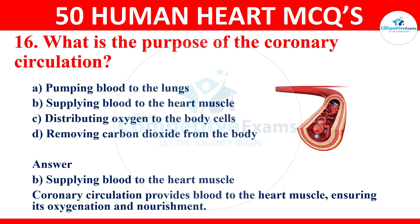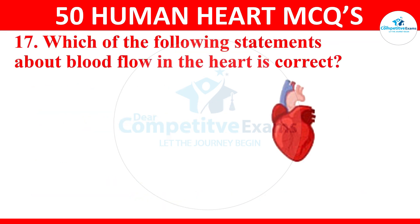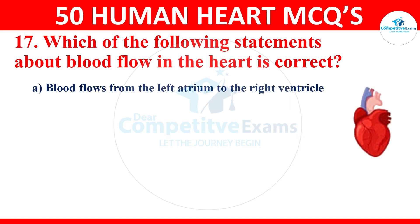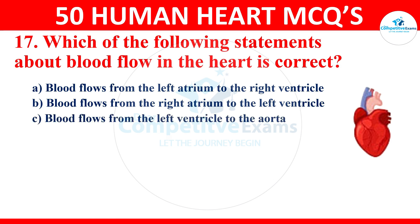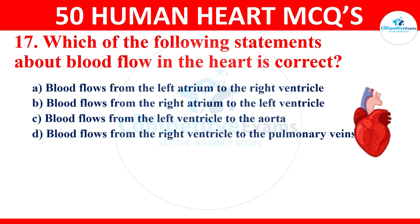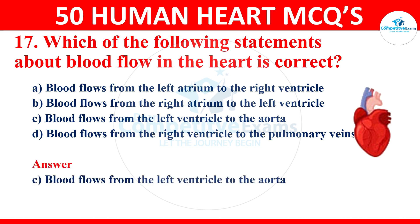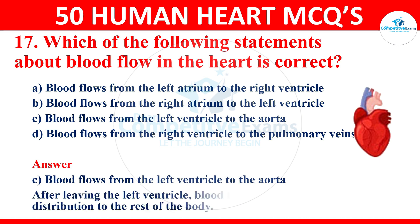Question 17: which of the following statements about blood flow in the heart is correct? Options are: blood flows from the left atrium to the right ventricle; blood flows from the right atrium to the left ventricle; blood flows from the left ventricle to the aorta; or blood flows from the right ventricle to the pulmonary veins. The correct answer is blood flows from the left ventricle to the aorta. After leaving the left ventricle, blood flows into the aorta for distribution to the rest of the body.